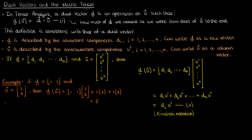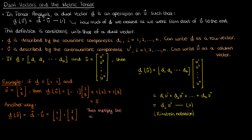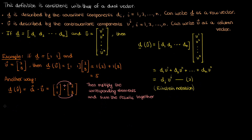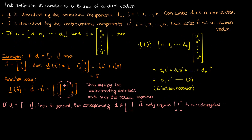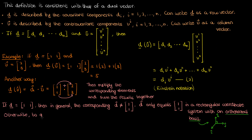Staying with this example, you might be familiar with another way to calculate the dot product of a dual vector and a vector, which you probably use very liberally in linear algebra. What you would do is convert the row vector — the dual vector — to a column vector, which I'll call d with an arrow on top, just by taking the simple transpose of the dual vector d, and then multiply the corresponding elements and sum the results together. But there's a big problem with this method: if I've got a dual vector d given by [1, 1], in general I can't just convert it to its corresponding regular vector by taking the transpose. I can only do this if I'm in Euclidean space in a rectangular coordinate system with an orthonormal basis.